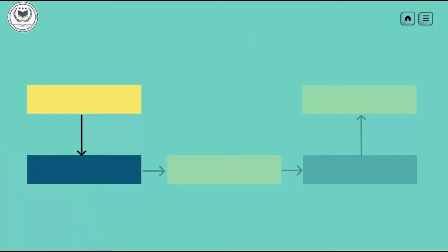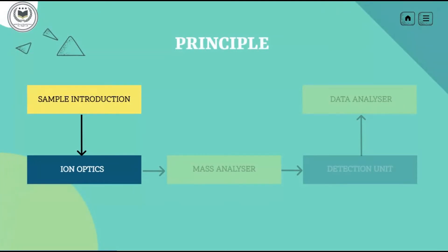Then comes ion optics. The set of electrostatic lenses located behind the skimmer cone is collectively referred to as ion optics. The role of the ion optics system is to guide the ion beam toward the mass analyzer and to prevent photons and other neutral species, such as non-ionized matrix components, from reaching the detector. The ion optics usually prevent this by positioning a photon stop or shadow stop in the ion path, or by guiding the ion beam off-axis.